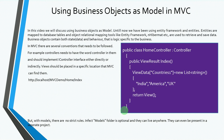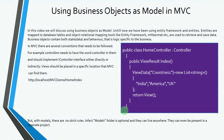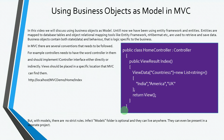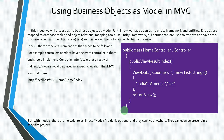In this video we will discuss using business objects as model. Until now we have seen using entity framework, where entities are mapped to database tables, and ORM tools like entity framework and hibernate are used to retrieve data. Business objects contain both state and behavior — that is, logic specific to the business. This is the key importance of the business object model.